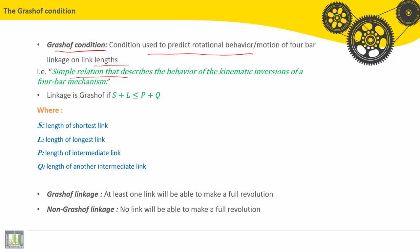A linkage is called Grashof if S plus L is less than or equal to P plus Q, where S is the length of the shortest link, L is the length of the longest link, P is the length of an intermediate link, and Q is the length of another intermediate link.